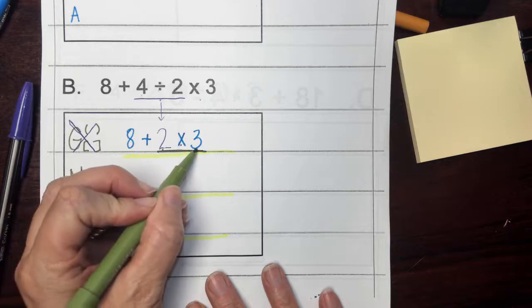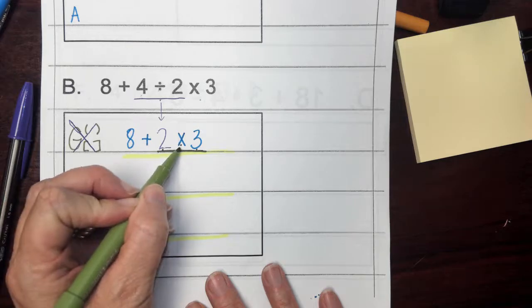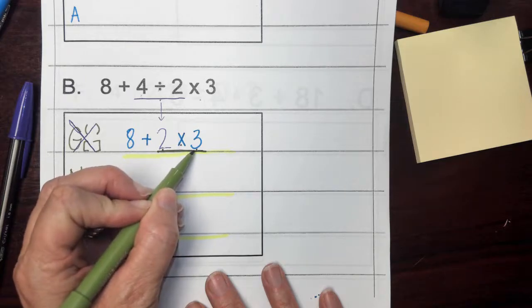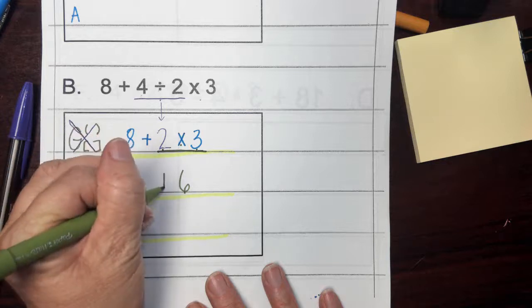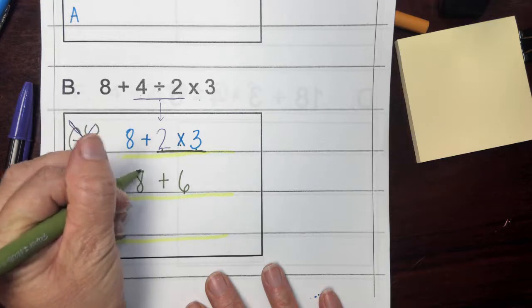So two times three, because two is in front of the multiplication sign, three is behind the multiplication sign. You're going to get six. You're going to drop your adding sign and the number eight.